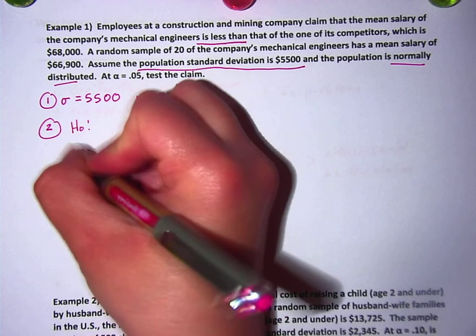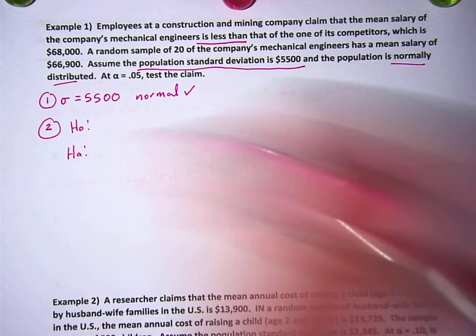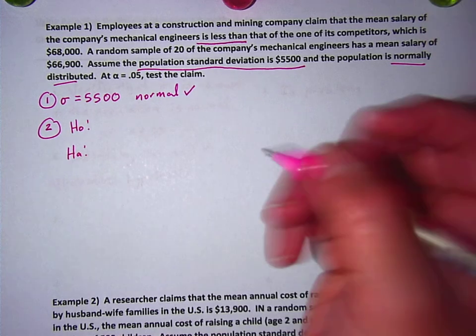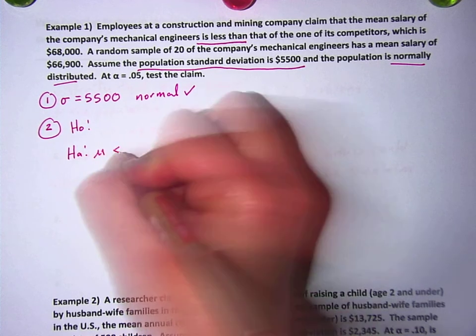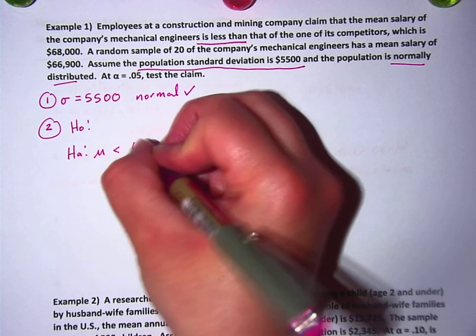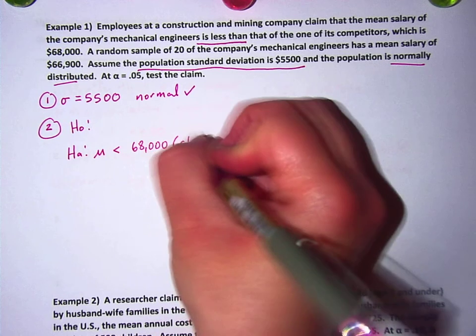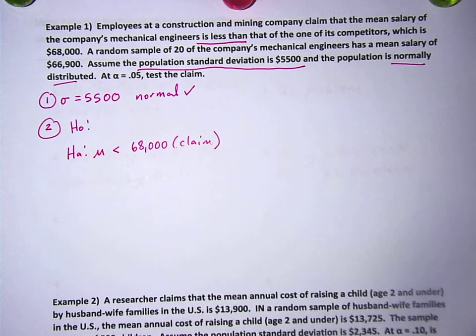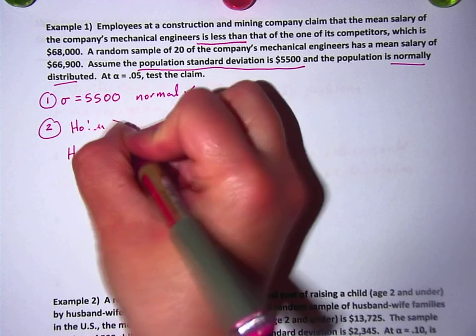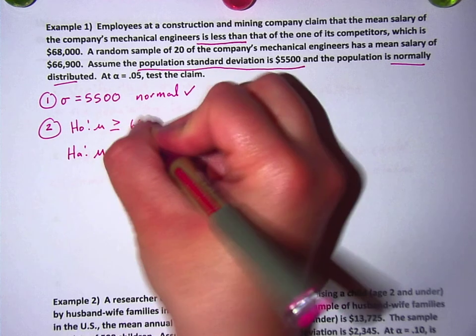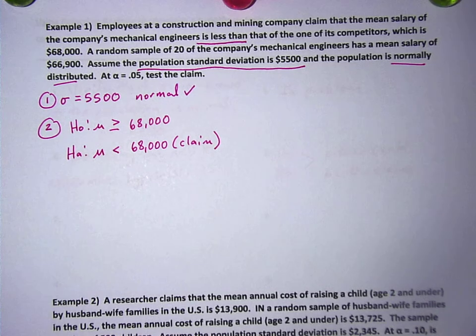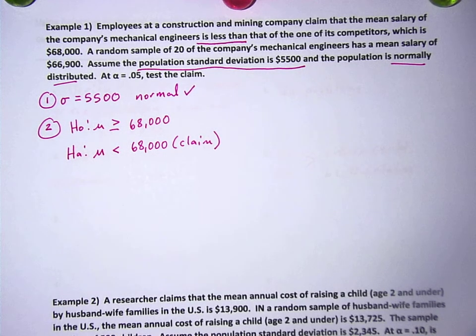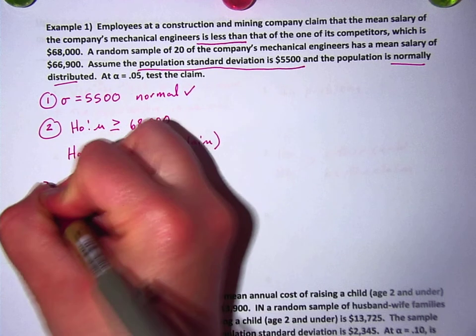So H sub 0, H sub a, this is what you guys got practice with last week. I told you that explanations were coming, and here they are. So let's see. Their claim is that it's less than. So they're saying that the mean is less than $68,000, and that is the claim. The reason why I put it in H sub a is because it doesn't have an equals to it. It just says less than, which means the opposite of that is greater than or equal to $68,000, and that's the null. So the null is greater than or equal to $68,000, and the alternative is less than $68,000, which, again, is their claim.